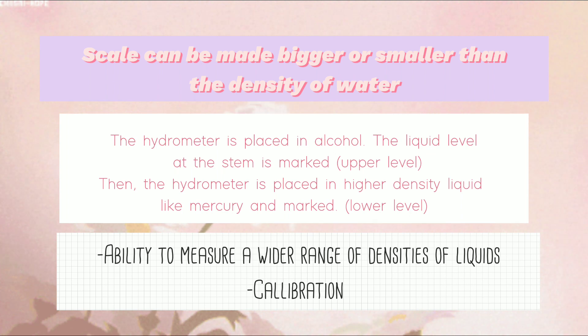Then the hydrometer is placed in higher density liquid like mercury and marked lower level. The reason: ability to measure a wider range of densities of liquids. Calibration.